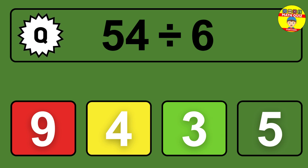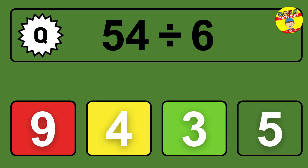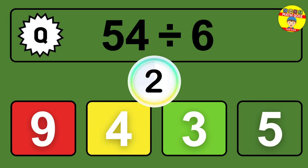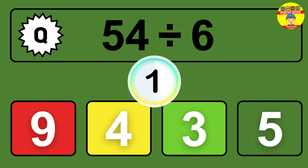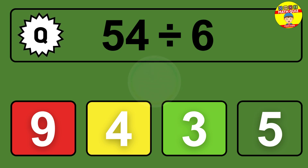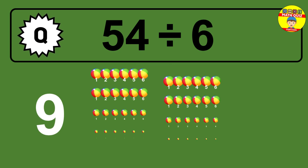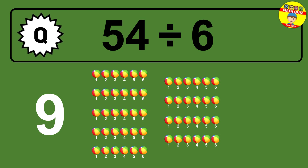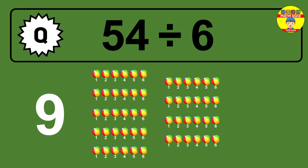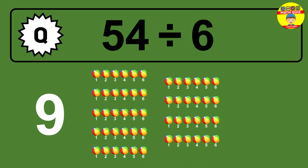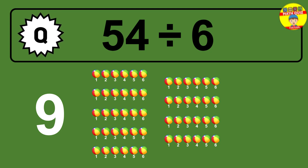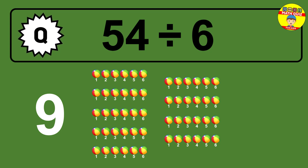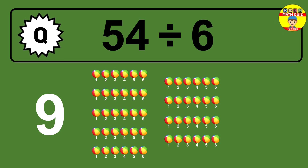54 divided by 6 — time to think. Let's go to the solution. Divide the number 54 by 6. Each group contains 6 units, so dividing 54 by 6 results in 9 equal groups. Thus, the result is 54 divided by 6 equals 9.